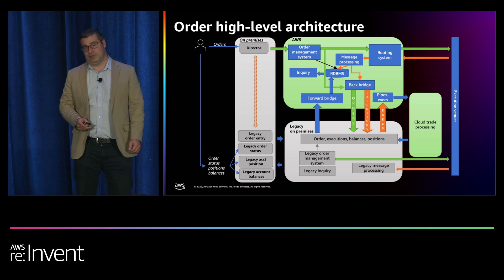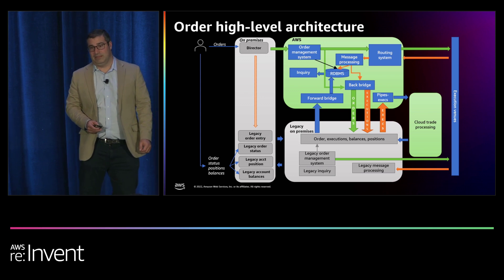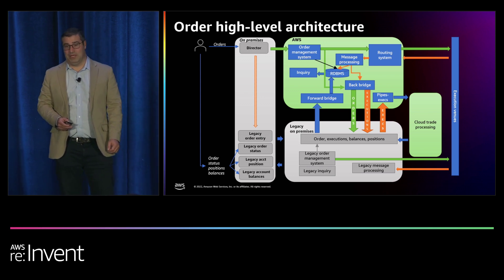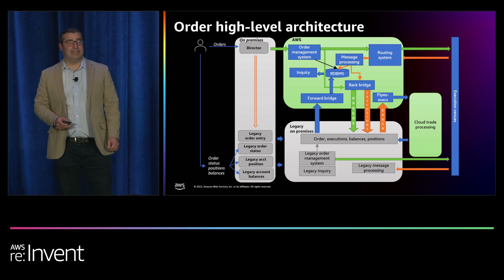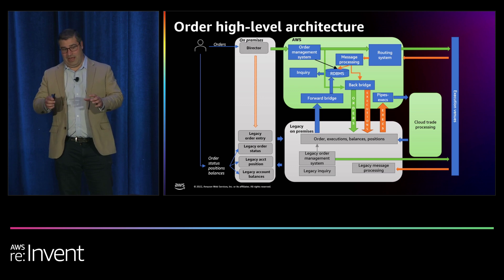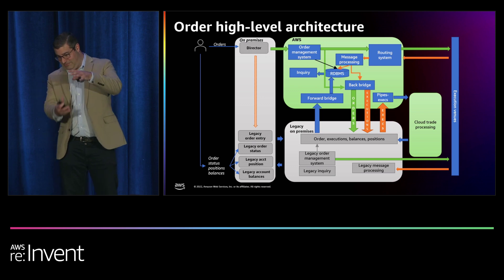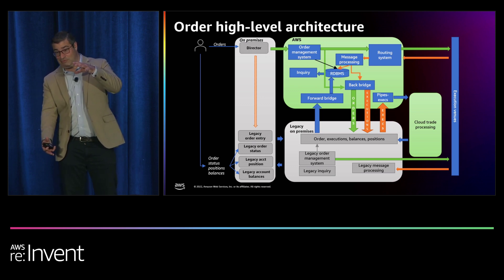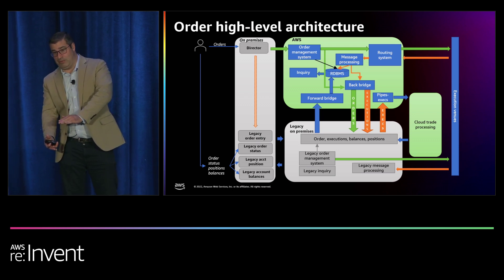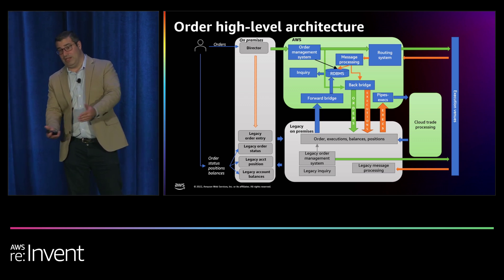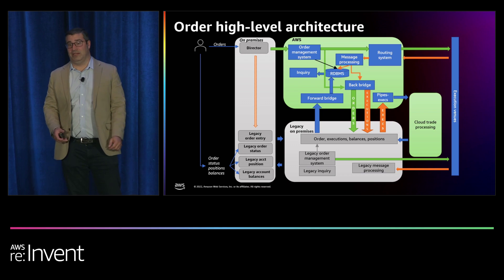It's very similar to a strangler pattern — essentially a rule-based engine with many rules that together represent 100% of the order set, and we slowly migrate them one by one until eventually we complete the migration.